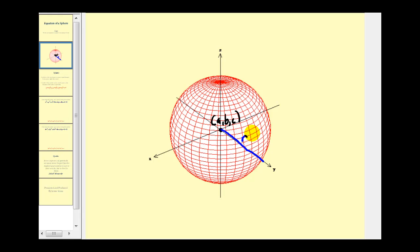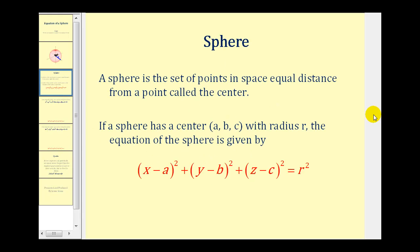If we have the equation of a sphere in standard form, we can identify both the center and the radius. A sphere is a set of points in space equidistant from a point called the center. If a sphere has center ABC with radius R, the equation is given by: the quantity X minus A squared, plus the quantity Y minus B squared, plus the quantity Z minus C squared, equals R squared. In this form, we can identify the center as well as the radius.